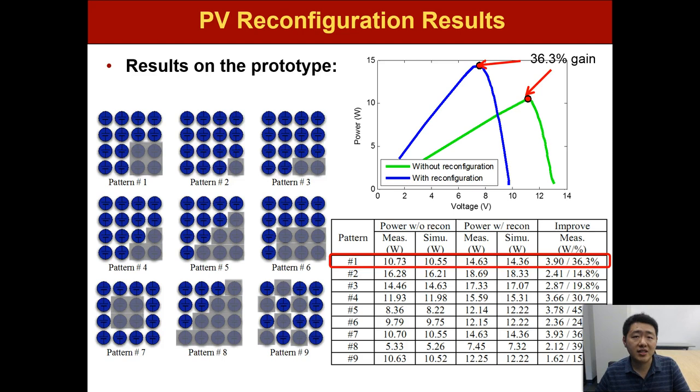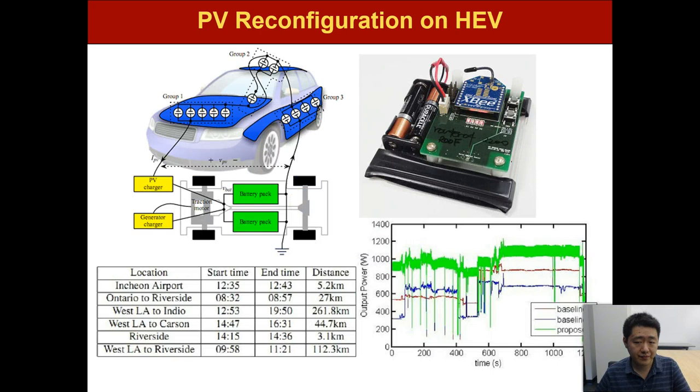After reconfiguration, we can achieve about 34% input power gain compared with the baseline method without any reconfiguration, and this is quite good results.